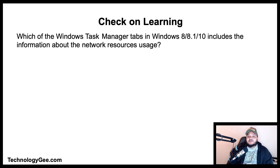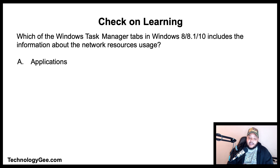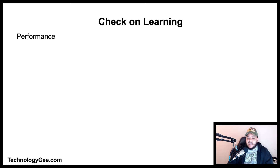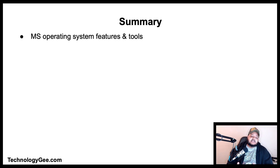Final question: Which Windows Task Manager tab in Windows 8, 8.1, and 10 includes information about network resource usage? Is it the Applications tab, Processes tab, Performance tab, or Services tab? The correct answer is the Performance tab.